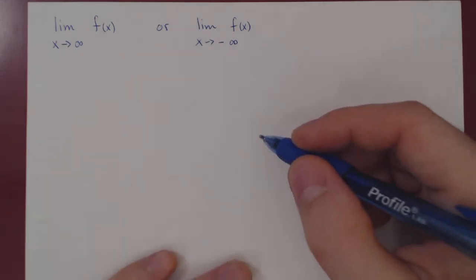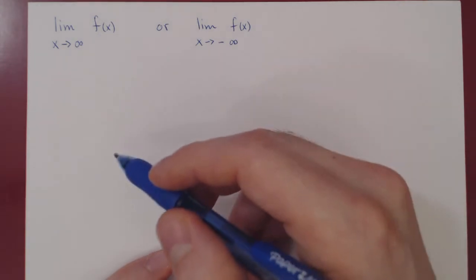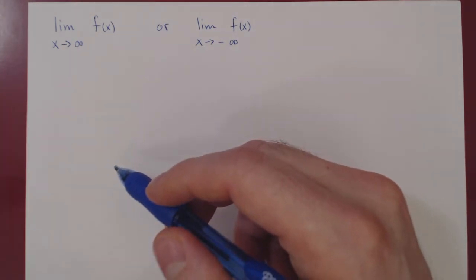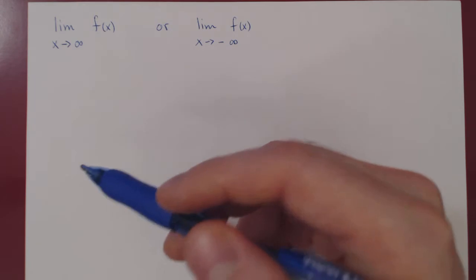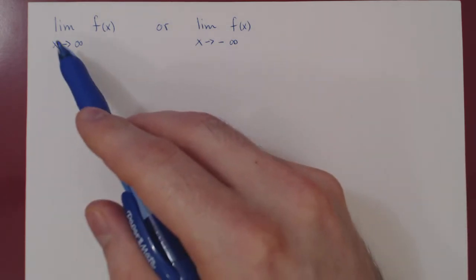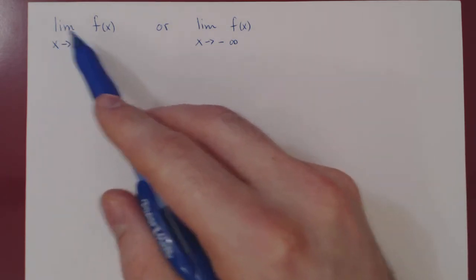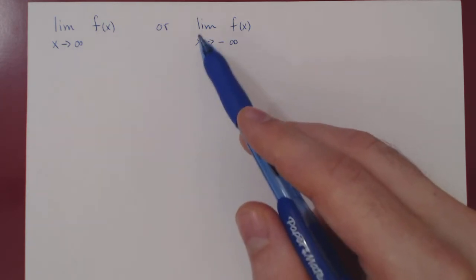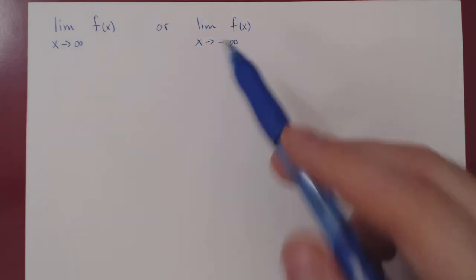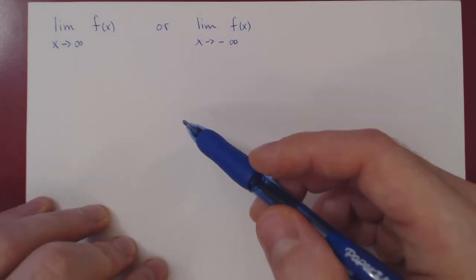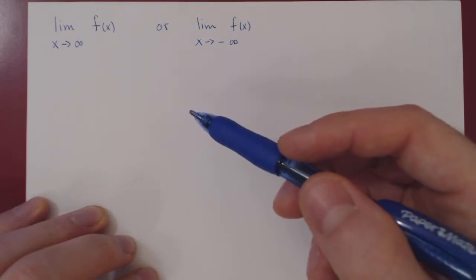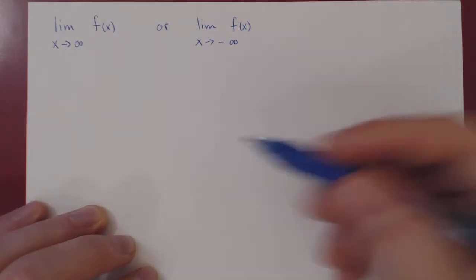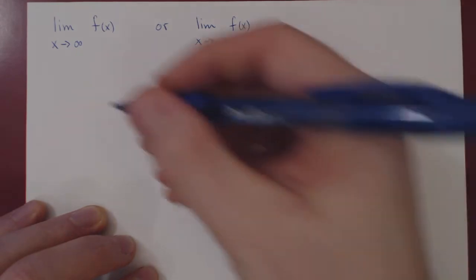In this video we will discuss limits at infinity in the case of polynomials and rational functions. A limit at infinity is either the limit of a function as x approaches positive infinity or as x approaches negative infinity. You'll see that in the case of polynomials and rational functions, this makes very little difference. Let's start with a simple example.